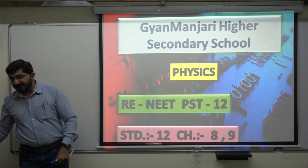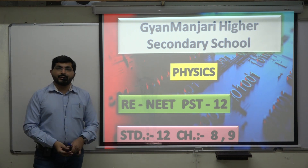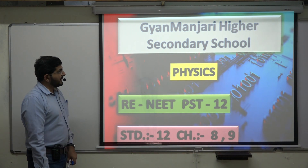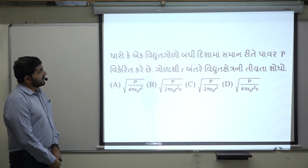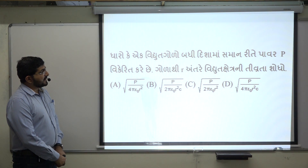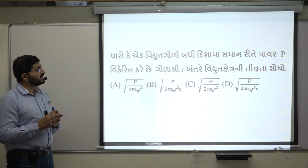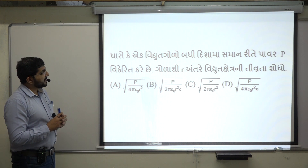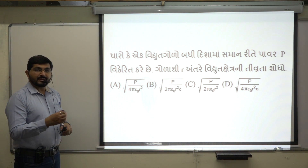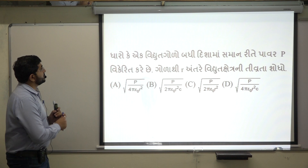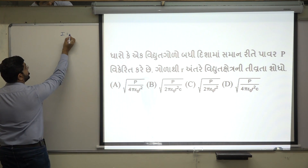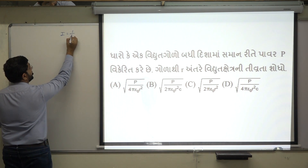Hello dear friends, let's start with the solution of your RENIT PST-12 First question. A point source of light radiates power P uniformly in all directions. The electric field intensity — we need to find this. So basically the electric field intensity is given by equation 1.